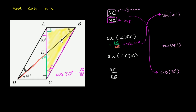Now we need to figure out what the sine of angle CDA is. CDA is this entire angle right over here. So we're now dealing with this larger right triangle. Sine is opposite over hypotenuse, so the opposite side is CA, and the hypotenuse is AD. So sine of angle CDA equals the length of CA over AD.